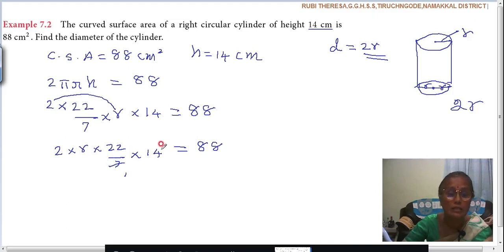1 7 is 7, 2 7s are 14. 2 into R is what? It is nothing but 2R. Do you follow? What is remaining here? What is remaining here? 22 into 2 equal to 88.